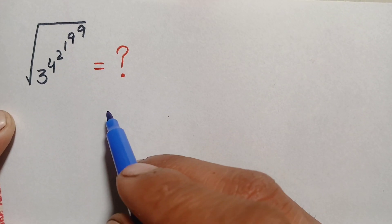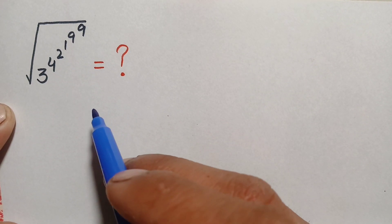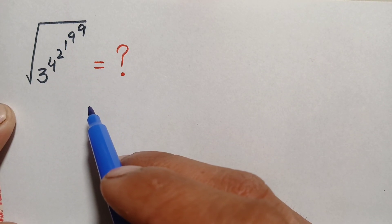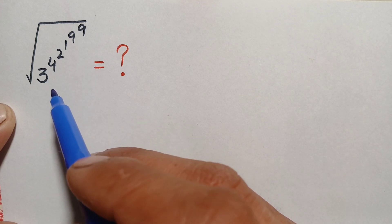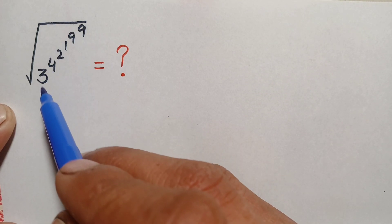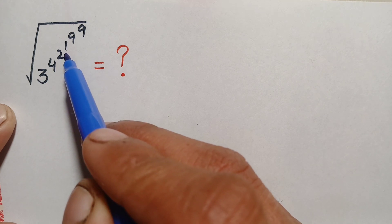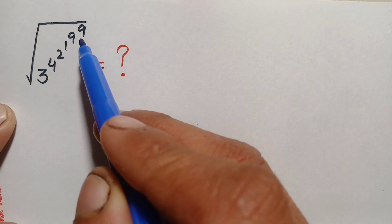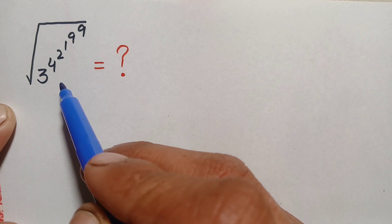Hello everyone, welcome back to Math Explorer. In this video I'm going to solve and find the value of this interesting radical math problem, which is the whole square root of 3 raised to the power 4, raised to the power 2, raised to the power 1, raised to the power 9, raised to the power 9.